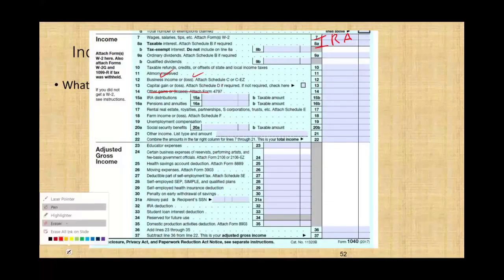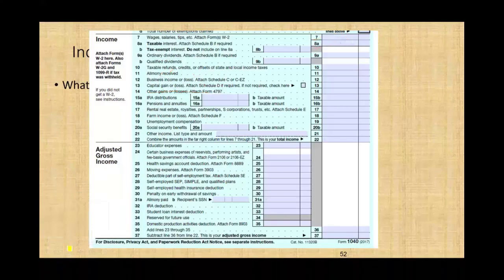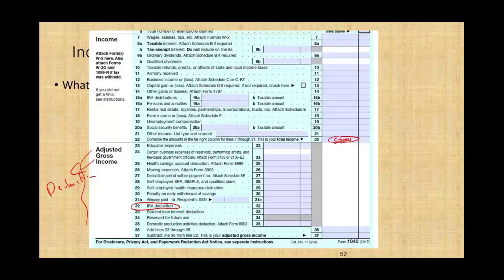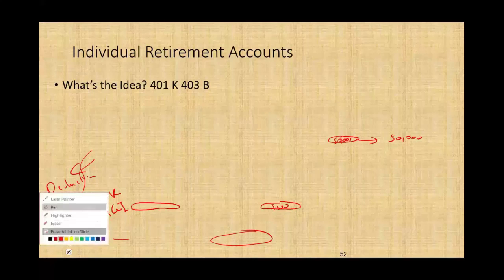Simply put, let me show you on the tax return what it looks like. You will have income — let's assume a total income of $50,000. The government gives you some adjustments, which are basically deductions, and one of those deductions is the IRA deduction. The IRA deduction would reduce your $50,000 income. You can shelter up to $5,500 — put some money away, not get it taxed now. This is a deduction for AGI, above line 37, which is good because it doesn't compete with the standard deduction.